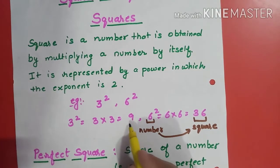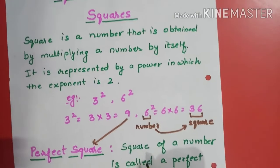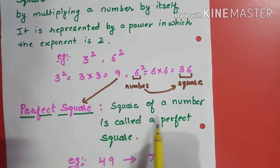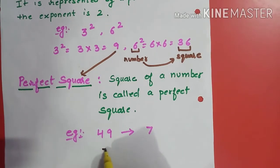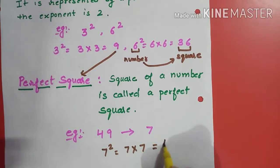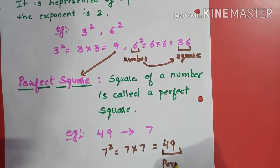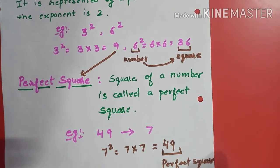The square of a number is called a perfect square. For example, 9 is a perfect square. Similarly, 49 is a perfect square — it is the square of 7. Multiply 7 by 7 and you get 49. So 49 is a perfect square, also called a square number. 7 is the number whose square we calculated.